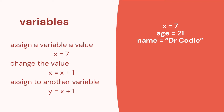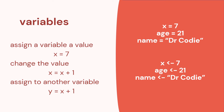A variable can equal a number or a string. In pseudocode, instead of using the equal sign we use an arrow. So those three examples in pseudocode would have an arrow: 7 pointing to x, 21 pointing to age, and 'Dr. Cody' with double quotes pointing to name.